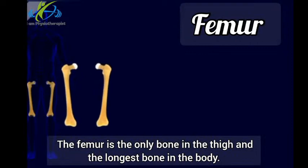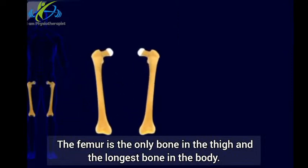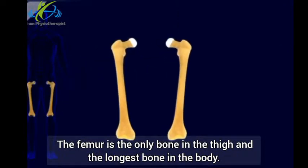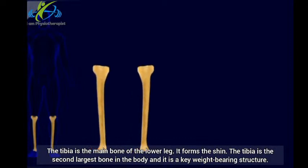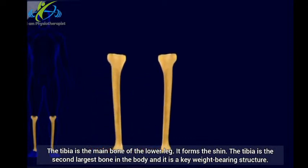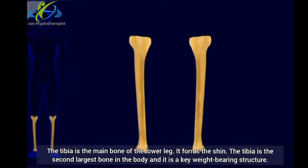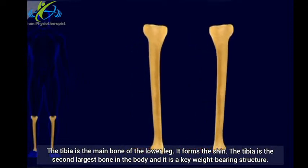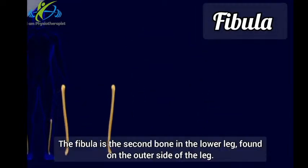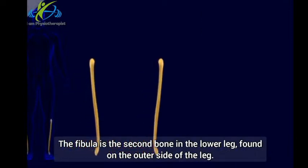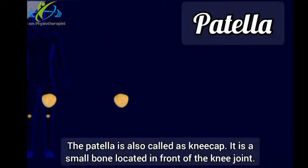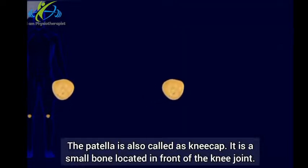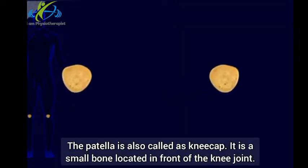Femur: The femur is the only bone in the thigh and the longest bone in the body. Tibia: The tibia is the main bone of the lower leg; it forms the shin and is the second largest bone in the body, serving as a key weight-bearing structure. Fibula: The fibula is the second bone in the lower leg, found on the outer side. Patella: The patella, also called the kneecap, is a small bone located in front of the knee joint.